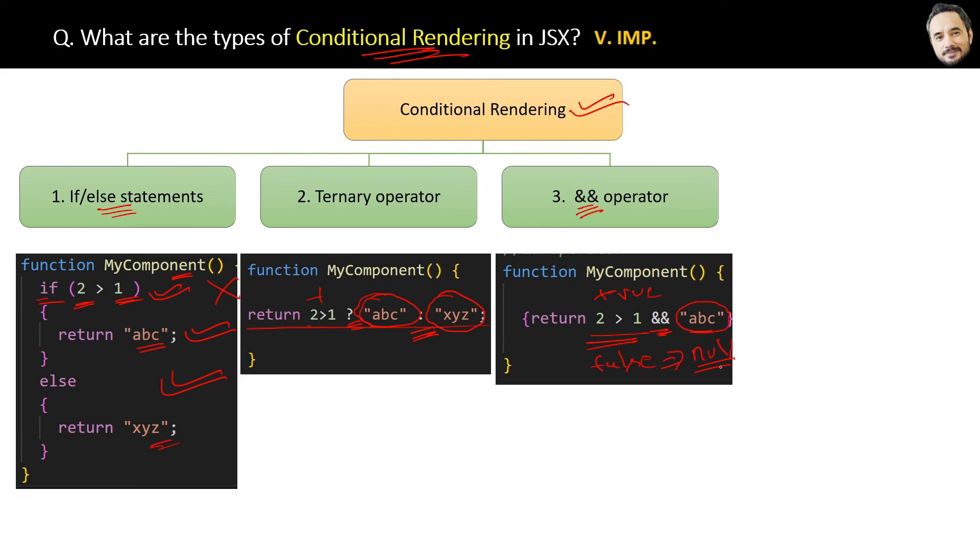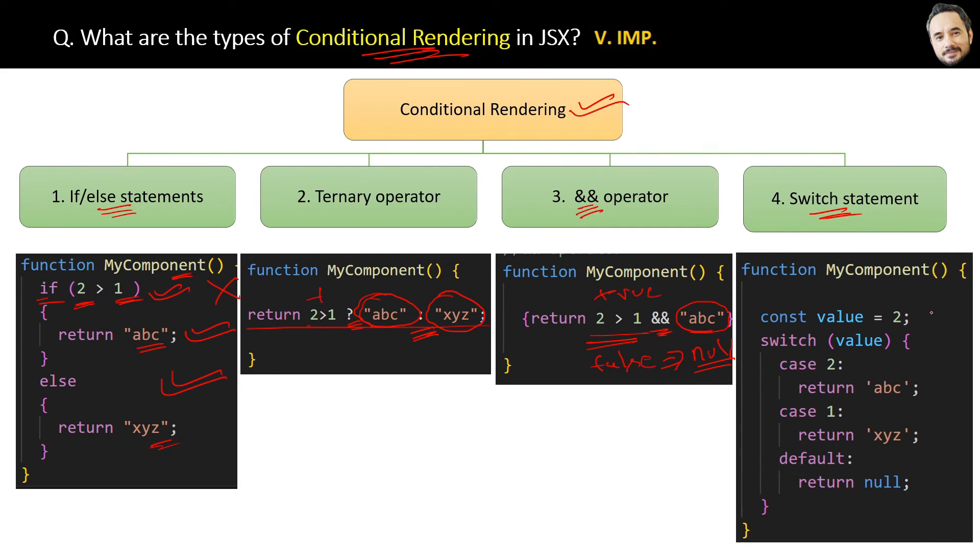The last conditional rendering technique is the switch statement. This is a traditional way where we can have multiple statements like this: if value equals 2, return this; value equals 1, return this. If something else, you can add more case statements here as per the project requirement.